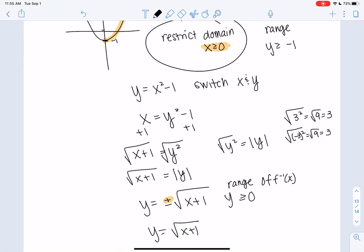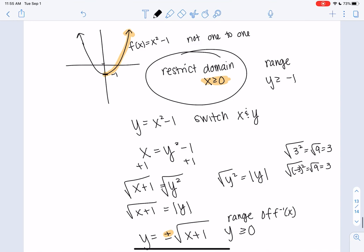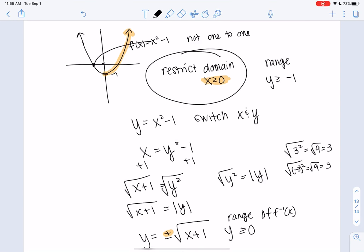And so because we restricted the domain, this works. And a square root function makes sense, right? It's going to make this nice reflection about y equals x. And again, we're only looking at the orange piece, and this piece goes away. So if your function is not 1 to 1, just get rid of half of it by restricting the domain.